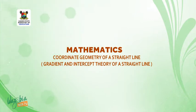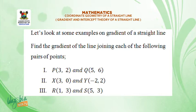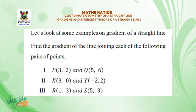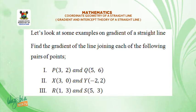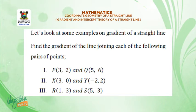Welcome back class. Let's look at some examples on gradient of a straight line. Find the gradient of the line joining each of the following pairs of points. Roman figure one: P with coordinates (3, 2) and Q with coordinates (5, 6). Roman figure two: X with coordinates (3, 0) and Y with coordinates (-2, 2). Roman figure three: R with coordinates (1, 3) and S with coordinates (5, 3). Now the solution.